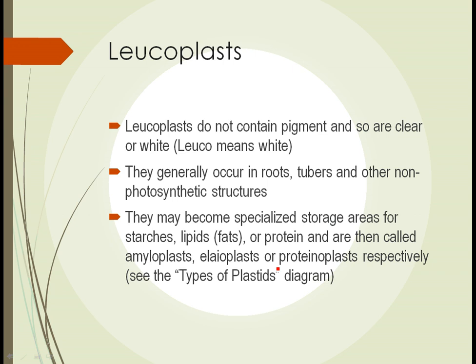Leukoplasts don't contain any pigment, so they're clear or appear white — 'leuko' being a root word meaning white. Leukoplasts generally occur in non-photosynthetic structures, primarily storage structures like roots or tubers. Think of a potato: cut it open and the inside looks white. They can be specialized storage areas for starches (carbohydrates), lipids (fats), or proteins — called amyloplasts, elaioplasts, and proteinoplasts respectively.